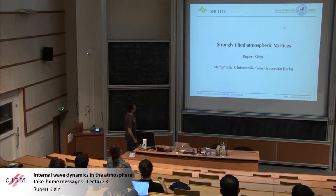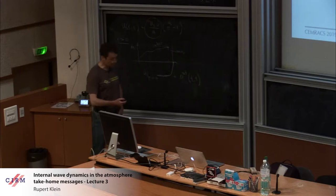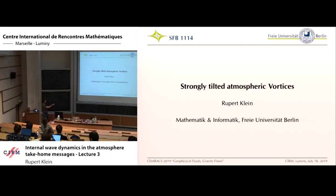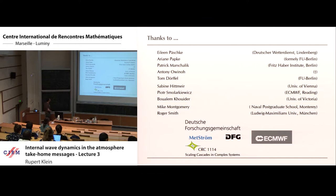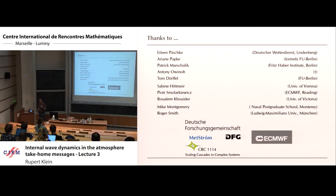Now I get into the topic I most wanted to present—my most exciting current project: strongly tilted atmospheric vortices with hurricanes or typhoons in mind. This is collaboration with PhD students, postdocs, Sabine Hittmeier (now professor at Vienna University), Piotr Smolarkiewicz (at University of Victoria), and hurricane scientists Mike Montgomery and Roger Smith. Mike Montgomery was actually a referee we had to battle in the first publication on this, and we learned a lot from him; in the end we remained friends and the paper was published.